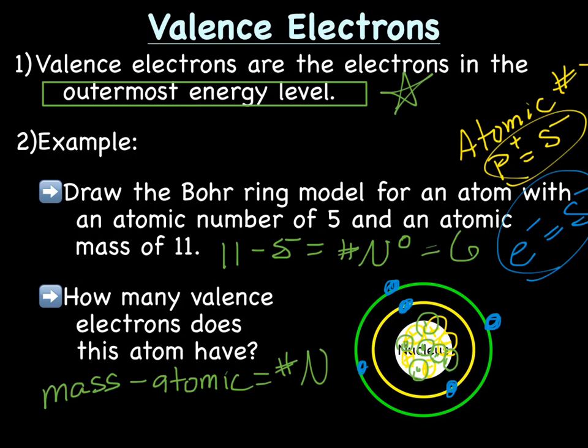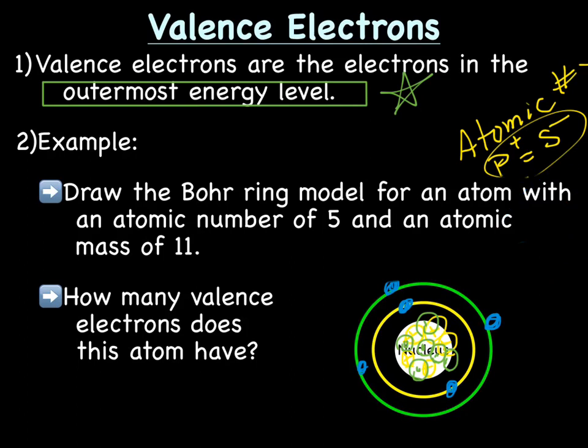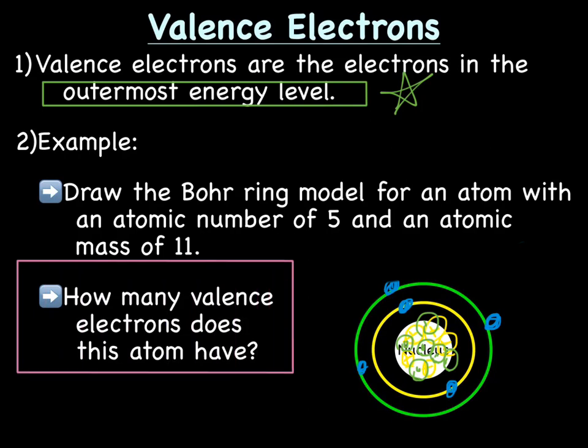The next question here: how many valence electrons does this atom have? Well, valence electrons are the electrons in the outermost energy level. The outermost energy level is the one farthest from the nucleus that has electrons in it. In this case, it's the green one or energy level 2. And there are 1, 2, 3 electrons. So this particular atom has 3 valence electrons.